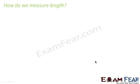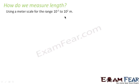Now we will study about length measurement. How do we normally measure length? The range of length which we see around us falls under the range 10 to the power minus 3 to 10 to the power 2 meters. Any length that falls within this range is generally measured using a meter scale, which we normally see in our labs and around us.